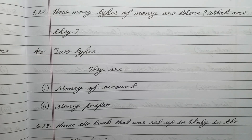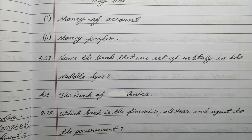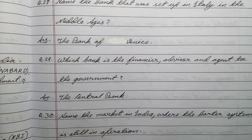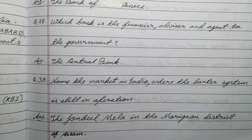Question number twenty-seven: how many types of money are there and what are they? Answer: two types — number one, money of account; number two, money proper. Question number twenty-eight: name the bank that was set up in Italy in the middle ages. Answer: the Bank of Venice. Question number twenty-nine: which bank is the financier, advisor, and agent to the government? Answer: the central bank. Question number thirty: name the market in India where the barter system is still in operation. Answer: the Jonbeel Mela in the Marigaon district of Assam.